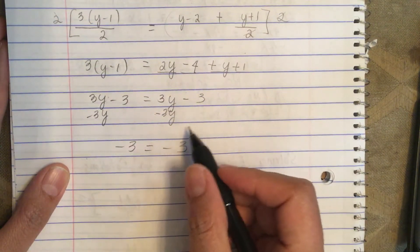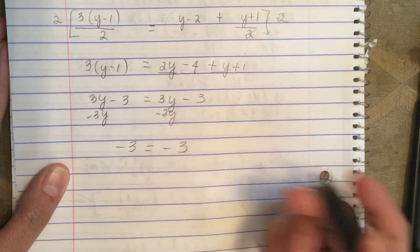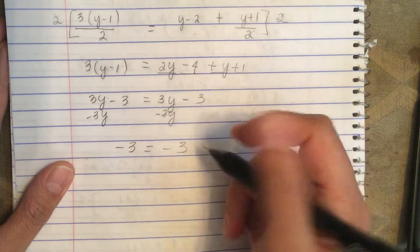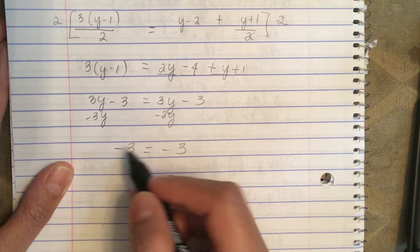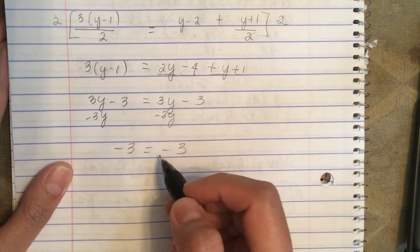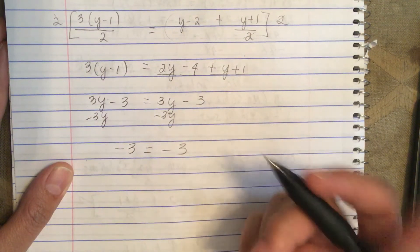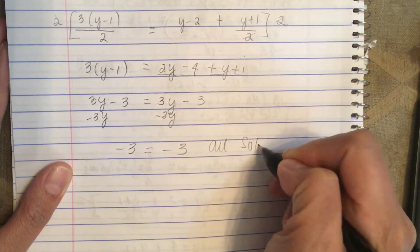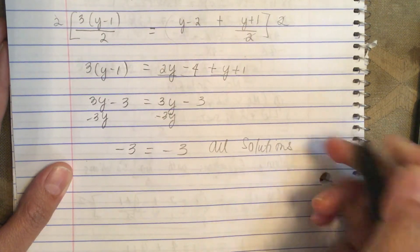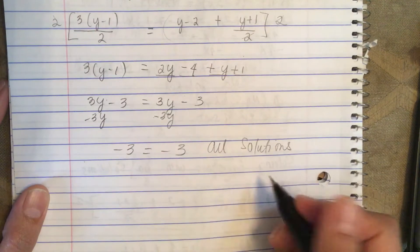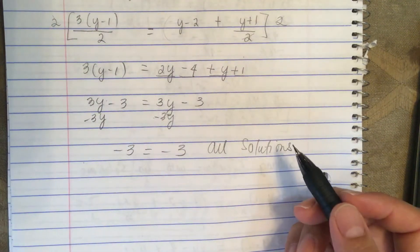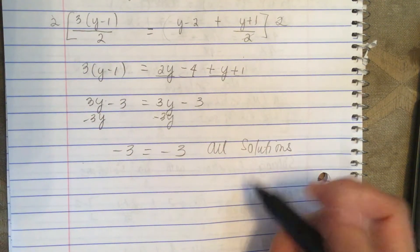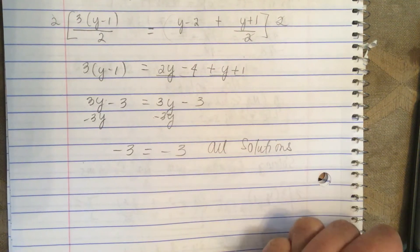This is called all solutions, because -3 always equals -3. This is called all solutions or indefinite solution.